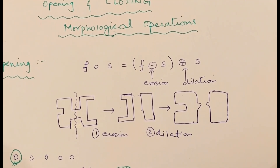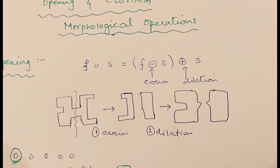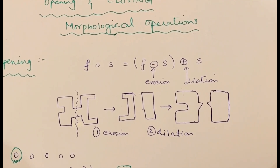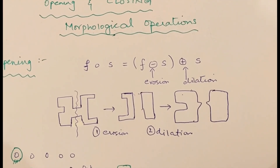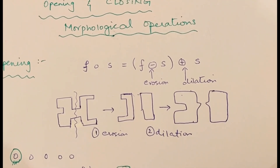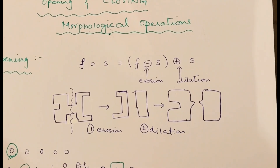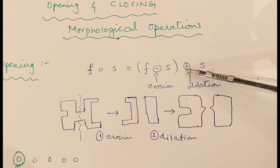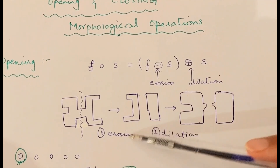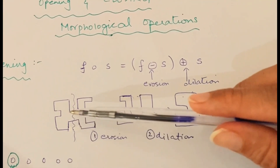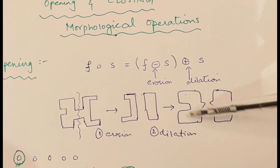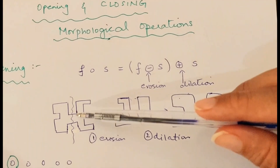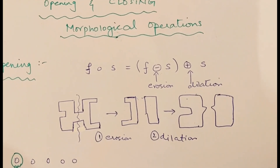The equation for opening is: we have an image represented with f, and we perform an opening operation on that image with the help of s, where s is a structuring element. To perform opening, we first do erosion and after erosion we perform dilation. The minus sign represents erosion and the plus sign represents dilation. The size of the object is increased with dilation, and weak links are opened with erosion, as the names also depict.